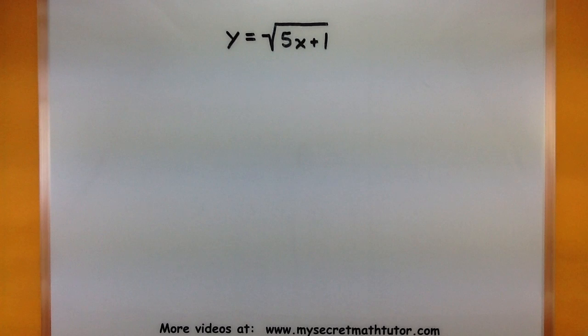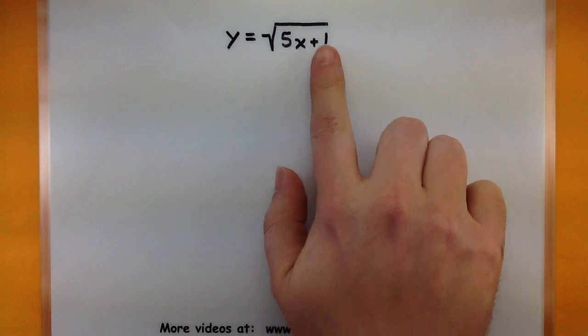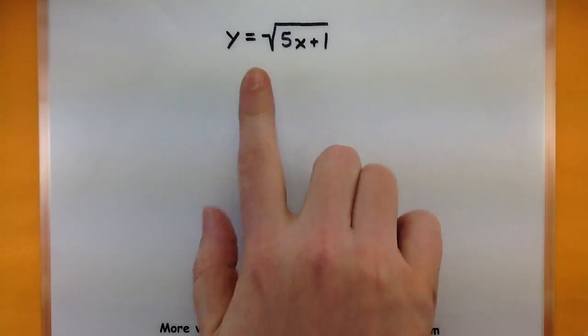Alright, let's start off with this one. This is y equals the square root of 5x plus 1, and it is a perfect example of the chain rule because we have one piece that's inside of another one like that square root.